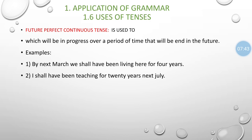So, in future tense, the action will start in the future — we predict or assume about a particular action. It also has four aspects: simple, continuous, perfect, and perfect continuous. Will and shall indicate such future aspects.